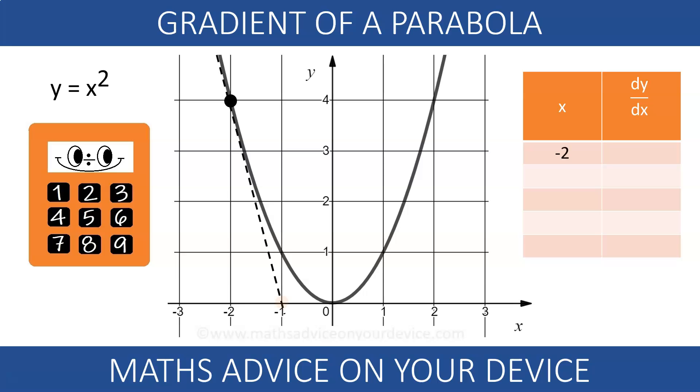the gradient at minus 2 is the gradient of the tangent, negative 4. The gradient at minus 1 is negative 2. At 0 is 0. The tangent is parallel to the x-axis and from here it starts increasing again. 2 and 4.